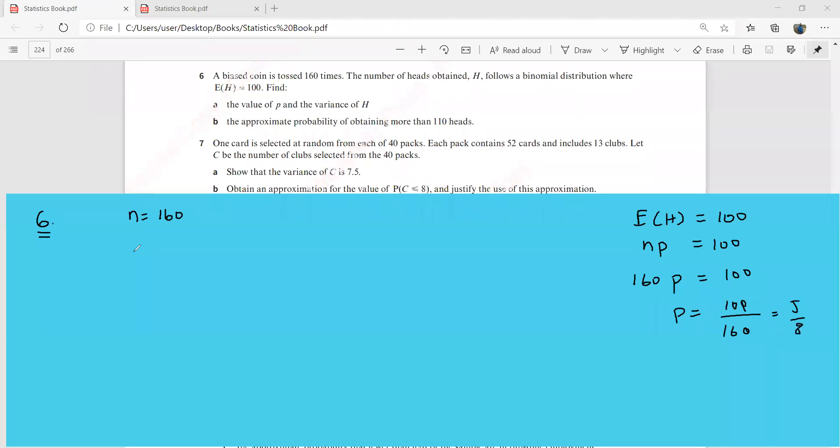So I can say that this h over here is binomially distributed with n as 160 and this is 5 over 8. That is the probability of success. So my p over here is 5 by 8, and I can also mention that my q is going to be 3 by 8. So we have this information. We can jump into the b part.